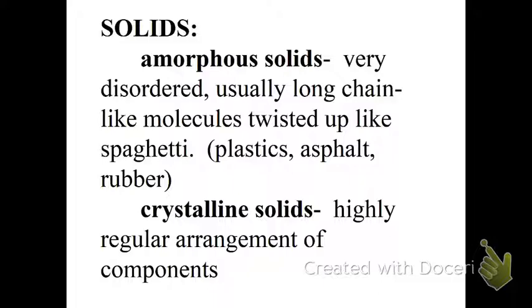First of all, we have two types of solids: amorphous solids and crystalline solids. The basic difference is one is very ordered, such as the crystalline, and amorphous is very disordered. Usually they're like long-chain molecules twisted up, kind of like plastics and asphalt.